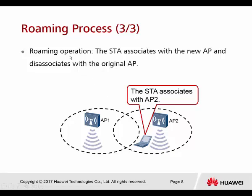Once the threshold is reached, the STA will start associating with the new AP and de-associating from the original AP. The STA is about to leave the current BSA, so it de-associates from the original AP and connects to the new AP. This is the process of Roaming.